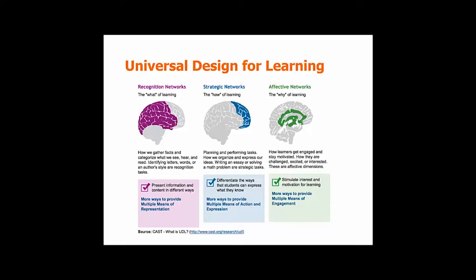One of these components is the recognition network — this is the what of learning. Do you present information and content in different ways? Another component is strategic networks — this is the how of learning. Do you differentiate the ways that students can express what they know? Do you provide multiple means of expression? And last, affective networks — this is the why of learning. Do you stimulate interest and motivate your learners? Do you provide multiple means of engagement throughout your course?